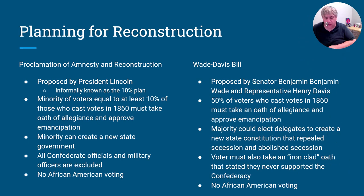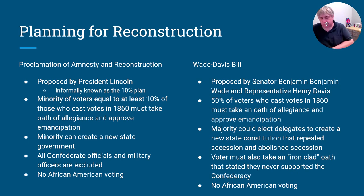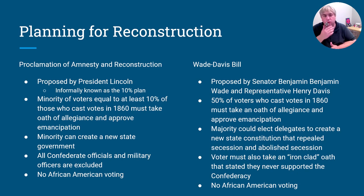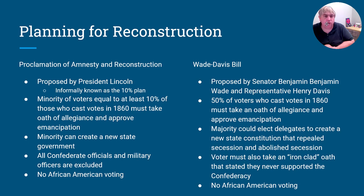Even before the war is over, the United States government is going to have to start planning for what to do when the war ends. Both Abraham Lincoln and Congress — the legislative branch — are going to put together two competing plans. Lincoln's plan is known as the Proclamation of Amnesty and Reconstruction, better known as the 10% plan. Lincoln wanted to find all the voters from the 1860 presidential election and get 10% of that number to pledge allegiance to the United States for the southern territories. Once that 10% takes the oath and agrees to end slavery, that minority group would be allowed to create a new state government.